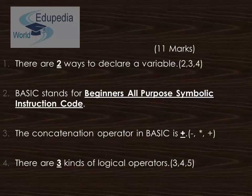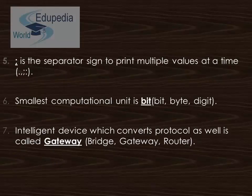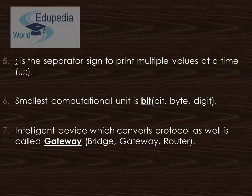First, let's look at the answers for the fill-in-the-blanks. Blank one: there are two ways to declare a variable. Blank two: BASIC stands for Beginners All-Purpose Symbolic Instruction Code. Blank three: the concatenation operator in BASIC is the plus sign. Blank four: there are three kinds of logical operators. Blank five: among the given symbols, the colon is the separator sign to print multiple values at a time. Blank six: the smallest computational unit is called a bit.